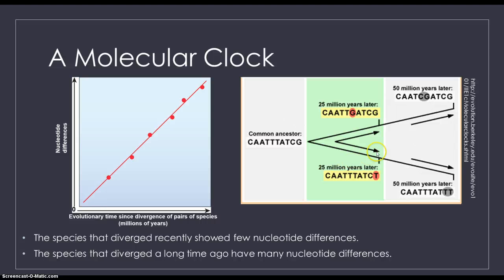Now flash forward, it's been 50 million years later. Now there are two nucleotide changes between the two species. A T turns into a C and a T turns into a G for species A. And for the second species, a C turns into a T and a G turns into a T. And as more time will pass, there will be more nucleotide differences between them.